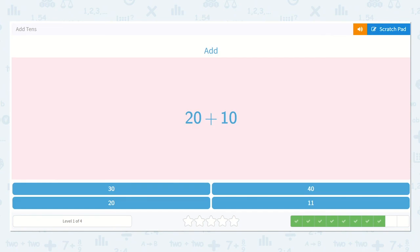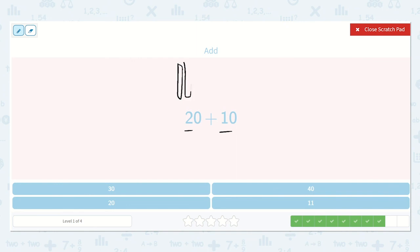Now we have 20 plus 10. 10, 20, and one more 10. So 10, 20, 30. Did you spot 30 down below? Yes, it's right here.